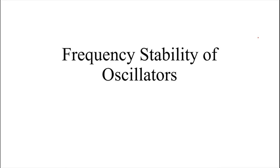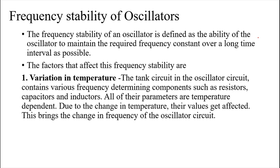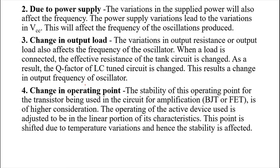Next we discuss frequency stability of oscillators. Because R, L, and C components are used in the feedback network, the frequency does not remain stable across all operating ranges. The parameters that affect frequency stability are: first, variation in temperature — when the outside temperature changes, the properties of active elements like transistors and passive components change, affecting the frequency.